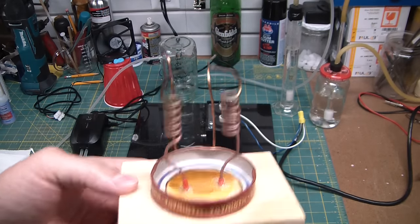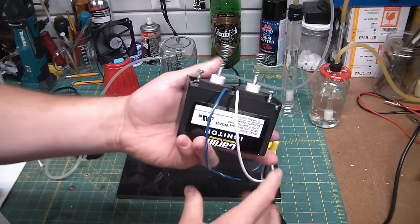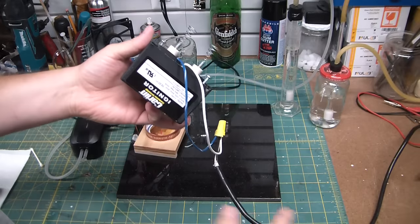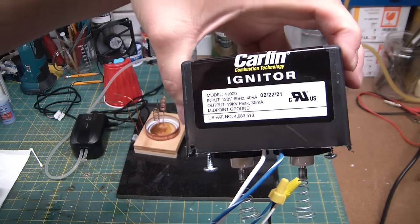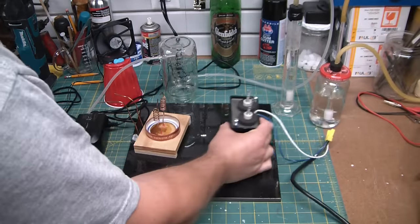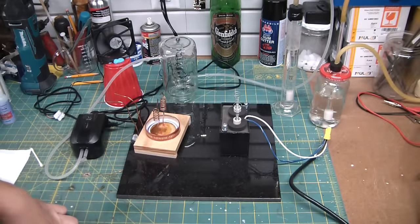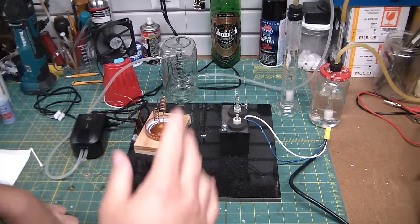The heart of the machine is this - triple checking we're unplugged before I touch it. It's a Carlin oil burner transformer, 40 volt-amp, so 40 watts. That pretty much matches what I've measured with my kilowatt meter - it floats somewhere between 35 and 40 watts under operation.